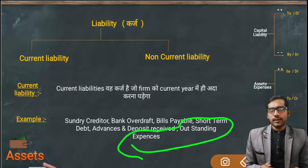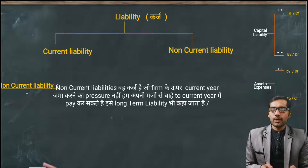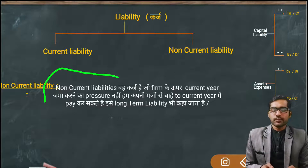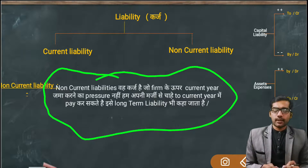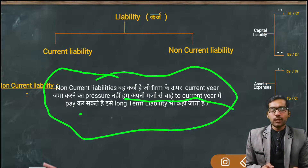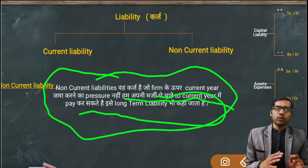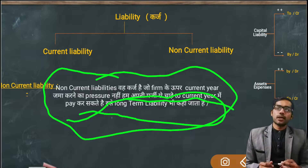Now let's look at what Non-Current Liability is. Non-Current Liability is that debt or claim on the firm for which there is no pressure to repay in the current year. You took a loan, and there's no pressure to repay it this year — you can deposit it whenever you wish. All such liabilities where there is no fixed pressure about how many days you have to repay, those fall under Non-Current Liability.